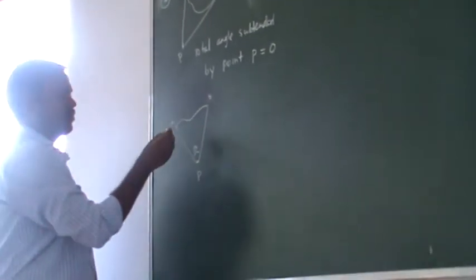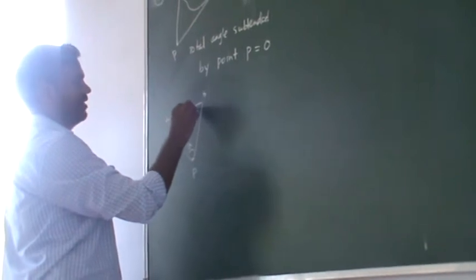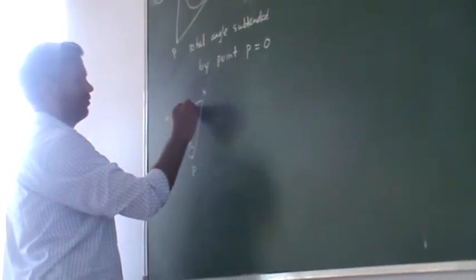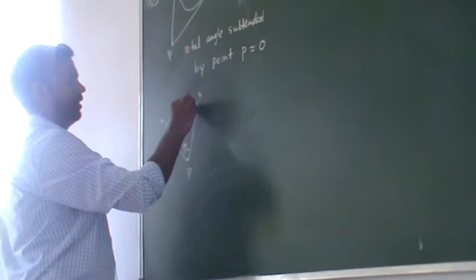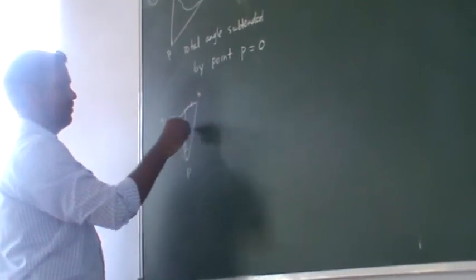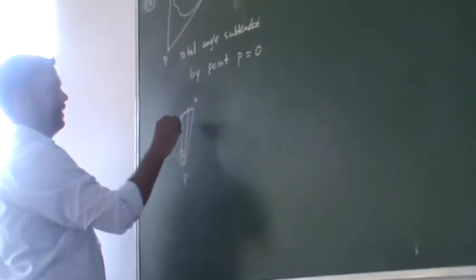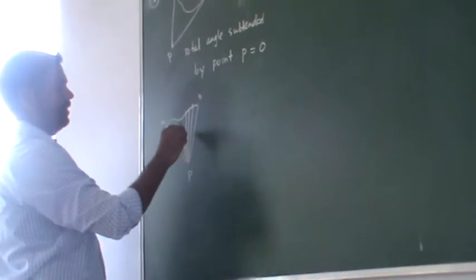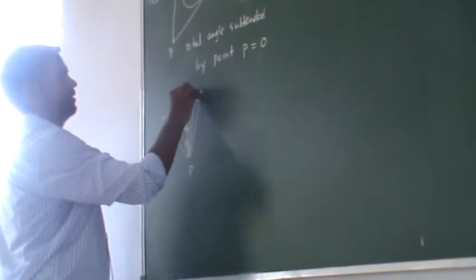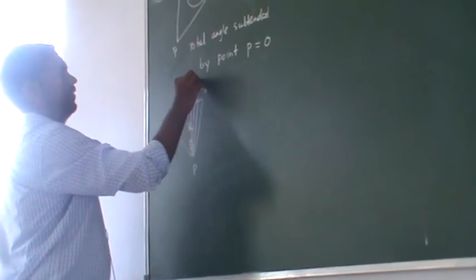So for doing this, first you take a smaller area, a differential element, a smaller curve. We draw it here. This is the distance R. This is the normal vector.